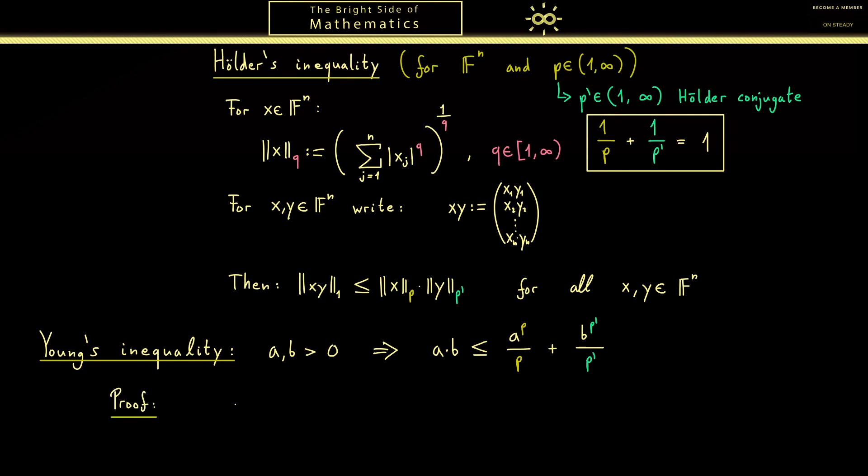What we can use here is that the common exponential function is a so-called convex function. This means that when you look at the graph, then you can choose any two points as you want. The direct connection would always be above the graph. This property is called convex because the red line is the convex combination of the two points.